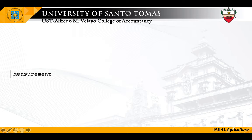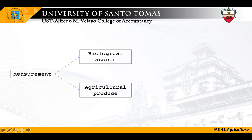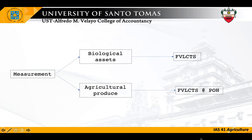Regarding measurement of biological assets and agricultural produce: a biological asset shall be measured on initial recognition and at the end of the reporting period at fair value less cost to sell. Agricultural produce harvested from an entity's biological assets shall be measured at fair value less cost to sell at the point of harvest. That measurement — fair value less cost to sell at the point of harvest — becomes the cost when applying IAS 2 to inventories. Meaning, the fair value less cost to sell at the point of harvest of the agricultural produce will be the deemed cost once reclassified as inventory.